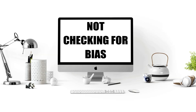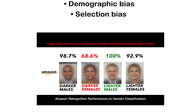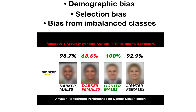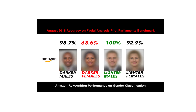Not checking for bias. Model bias appears in many forms — demographic bias, selection bias in your training data, or bias from imbalanced classes. A model might discriminate based on gender or ethnicity if these biases exist in training data.